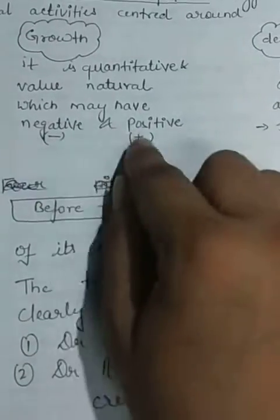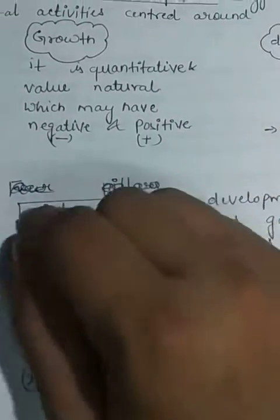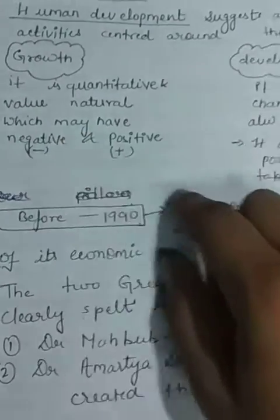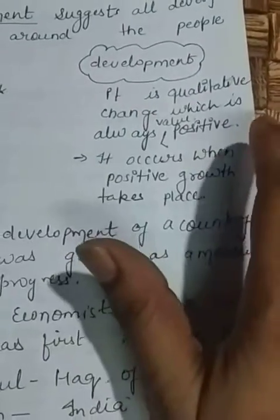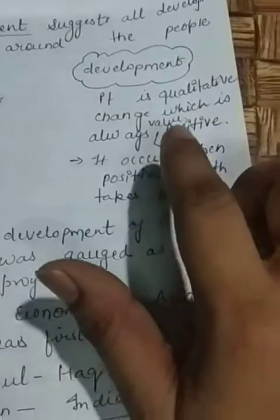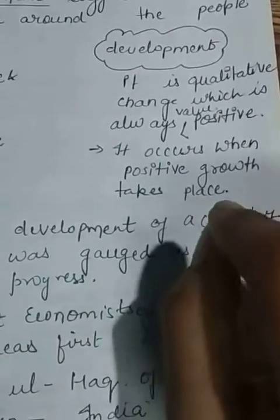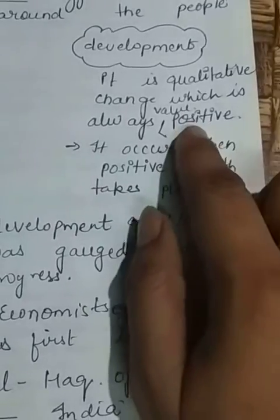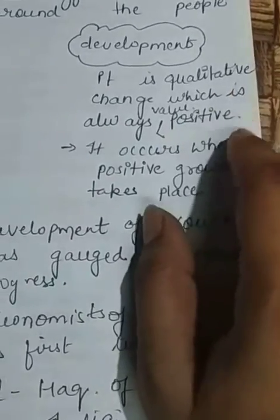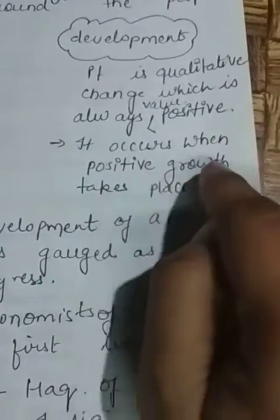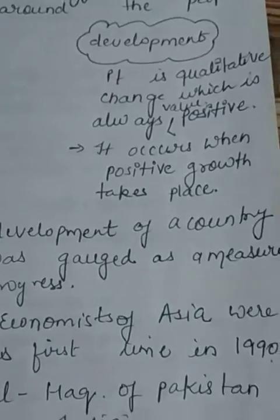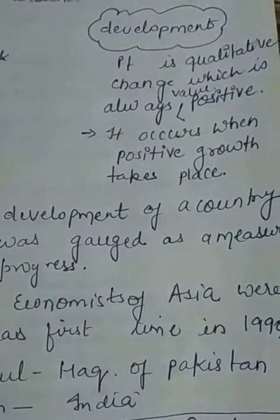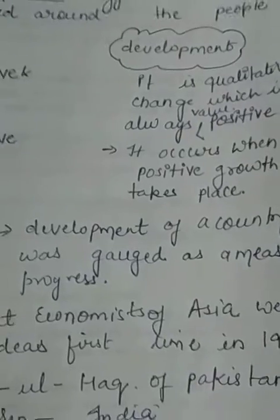When we move to development, it is a qualitative change which is always positive. The word development is used only where something positive occurs. Development occurs when positive growth takes place, but remember that positive growth does not always lead to development. Development occurs specifically when there is a positive change in the quality.